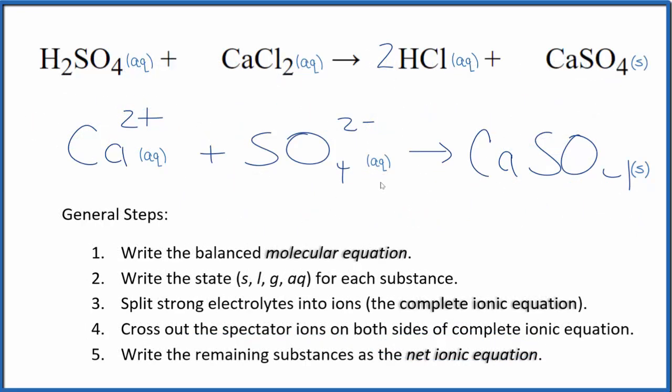So this is the balanced net ionic equation for sulfuric acid and calcium chloride. You'll note the charge is balanced. We have a two plus here and a two minus here. That adds up to zero, net charge of zero. In the products, we have a neutral compound here, net charge of zero as well.